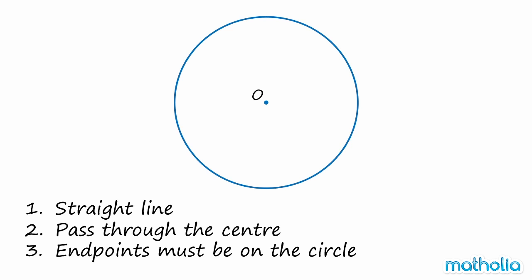This circle has a center point O. Let's draw a straight line that passes through this point and has end points on the circle. Let's label the line PQ. So we can say that the straight line PQ is a diameter of the circle.